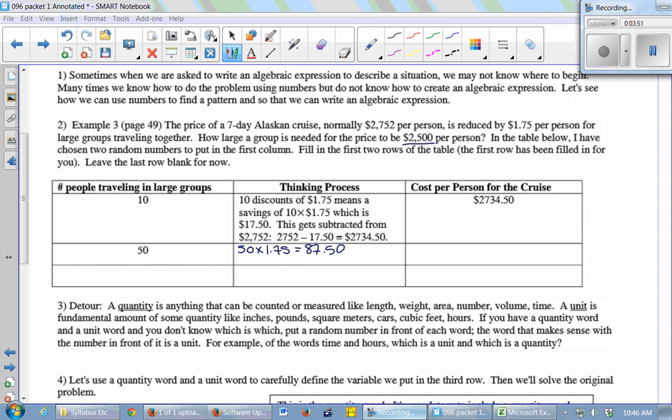So that's our discount amount. We are getting discounts of $1.75 for each of those 50 people. That's $87.50. So I'm going to subtract that from the $2,752. So $2,752 minus $87.50, and you get $2,664.50. So it looks like I actually need a group even bigger. It needs to be more than 50 people to bring the price down to $2,500.